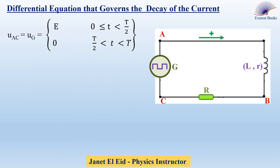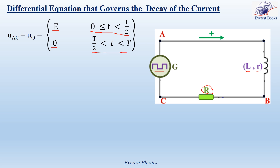Differential equation governing the decay of the current in the circuit: we have a function generator providing a square wave voltage connected in series with a resistor of resistance R and a coil of inductance L and internal resistance r. The voltage provided by the function generator is equal to E during half a period and 0 during the second half. To determine the differential equation during the decay of the current, we apply Kirchhoff's voltage law following the positive sense, giving: uAB + uBC + uCA = 0.